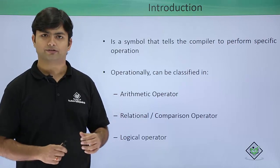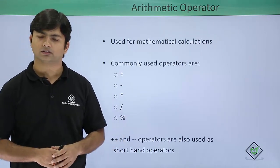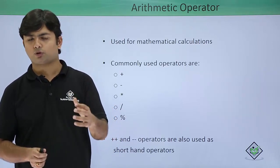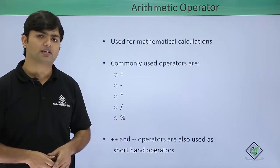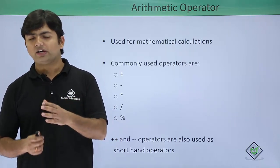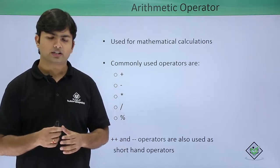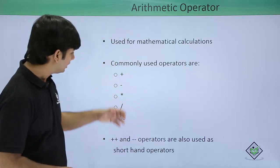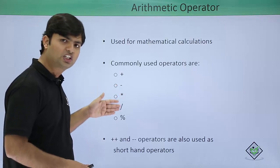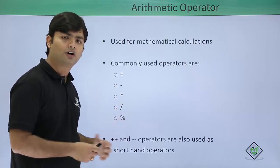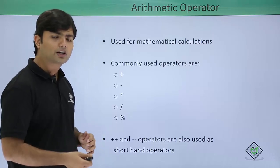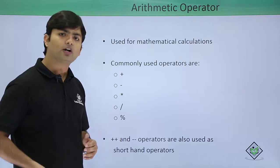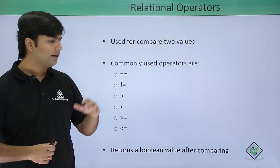Let's start with arithmetic operators. In the data types we've seen structures like integer, float, decimal, and long, which take numerical data in decimal or non-decimal format. Once we have that data, we can perform arithmetic operations using plus, minus, multiplication, division, and modulus — which handles the remainder. We'll also cover the plus-plus and minus-minus symbols, used to increase or decrease a value by one.